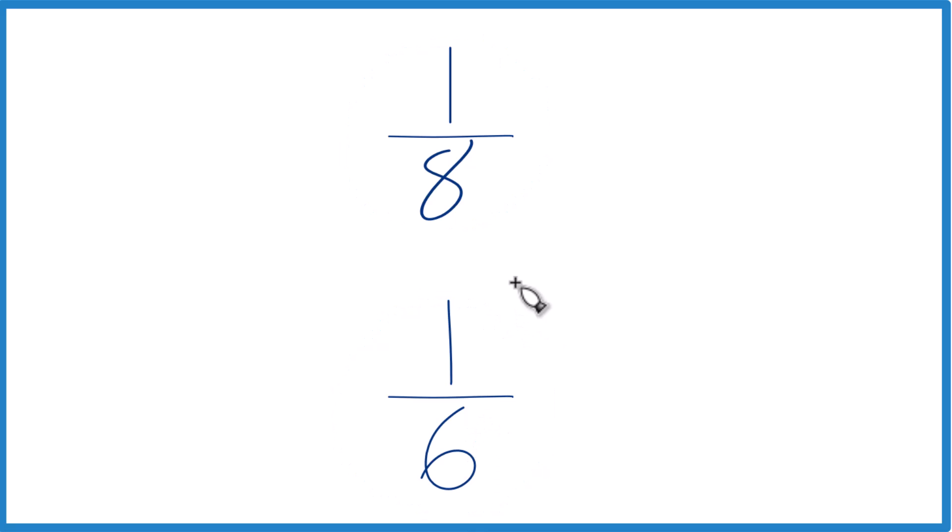So you might be able to reason this out if you had one object. You divide it into 8 pieces or 6 pieces. Which one would have the bigger pieces? It would be the one divided into 6. So 1/6, that is greater than 1/8.